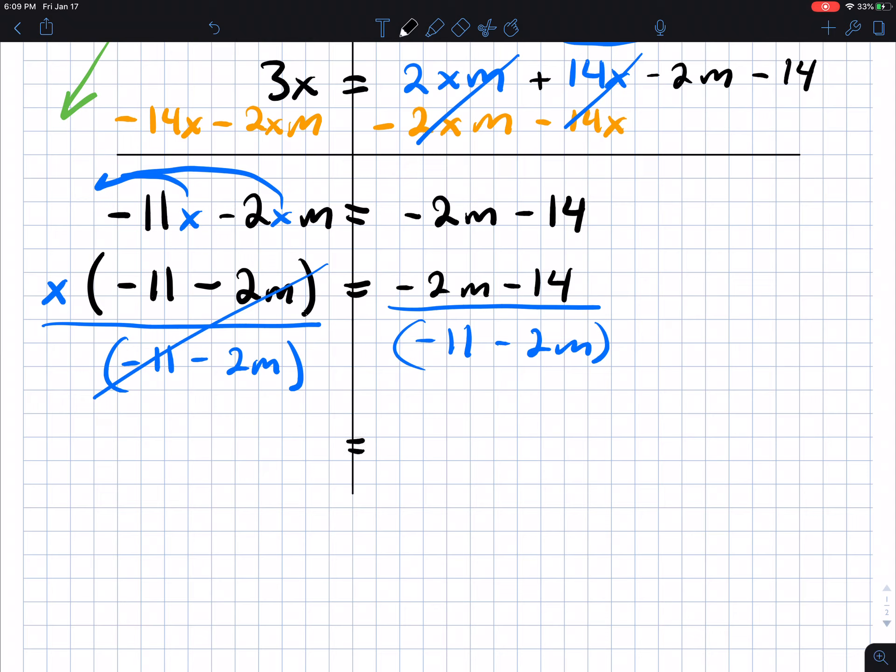Bring down our equal sign. So then ultimately, x equals negative 2m minus 14 divided by negative 11 minus 2m. Yeah, this should be enough here.